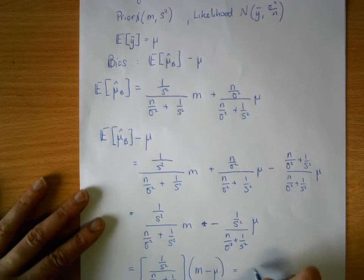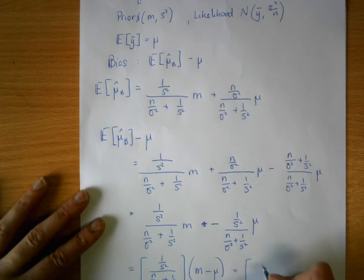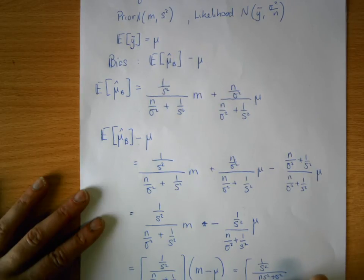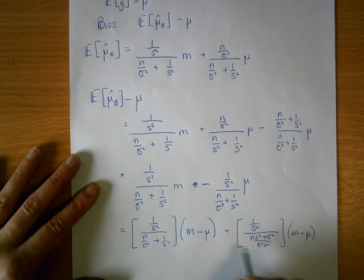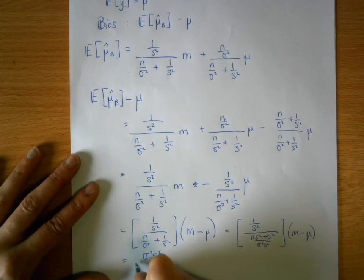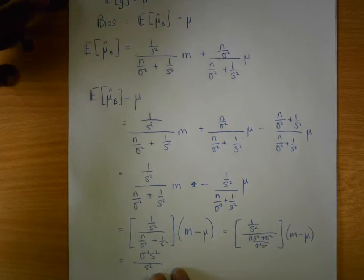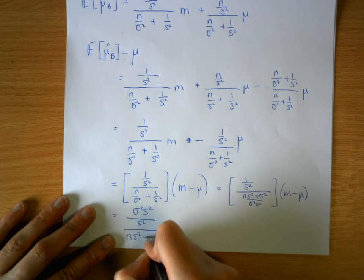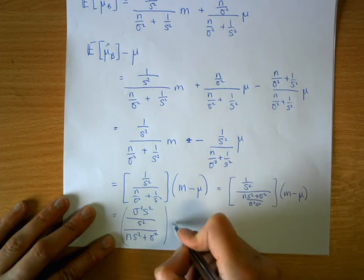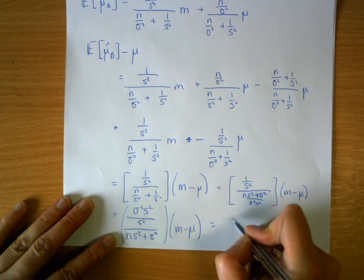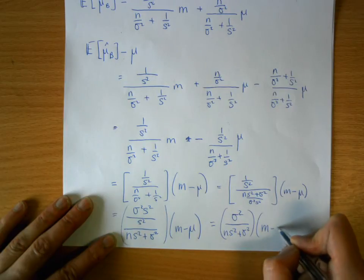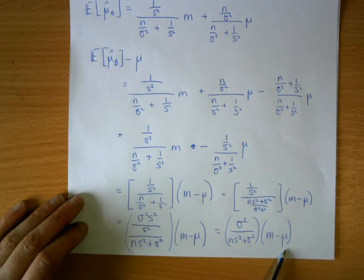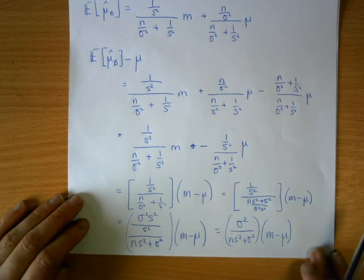A little simplification: rewriting 1/s² divided by (n/σ² + 1/s²) as (1/s²) times (σ²s²)/(ns² + σ²), then bringing terms above the line gives σ²s²/s² divided by (ns² + σ²), which simplifies to σ²/(ns² + σ²). So the bias of the Bayesian estimator of the mean is σ²/(ns² + σ²) times (m minus mu), given a normal likelihood and conjugate prior.